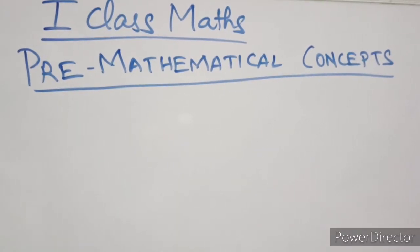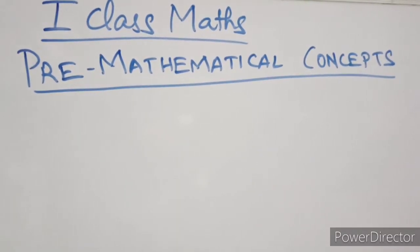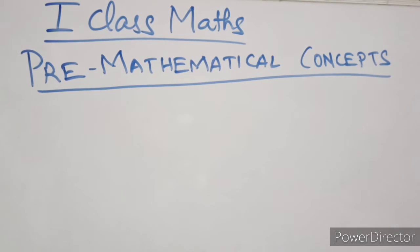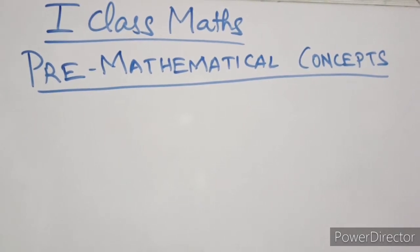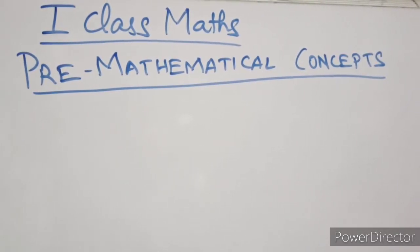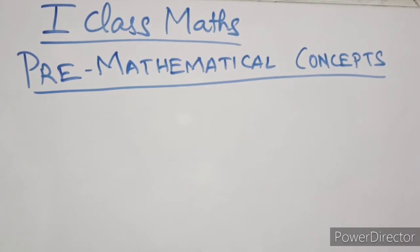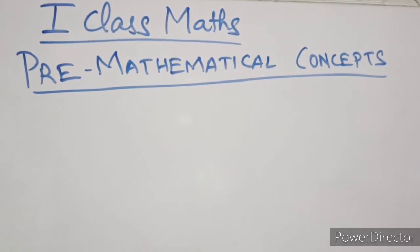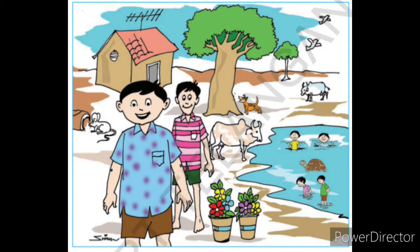Hi kids, today we are going to learn pre-mathematical concepts. This is first class maths, first chapter. Look at the picture in your textbook and observe the picture. Who are there in the picture? What are they doing? Observe everything and try to answer the questions given below the picture.